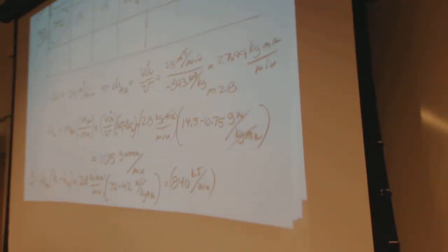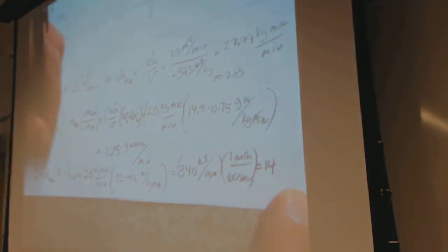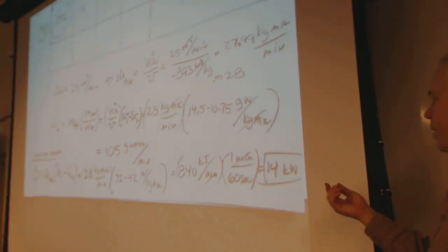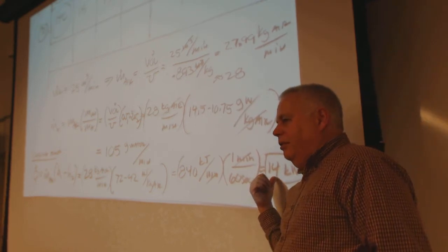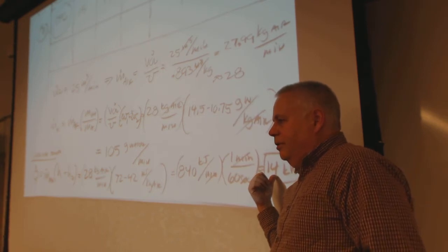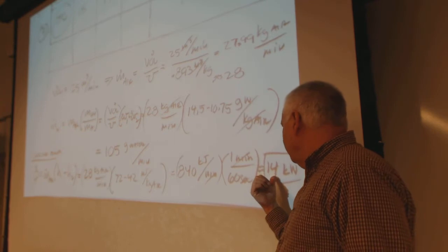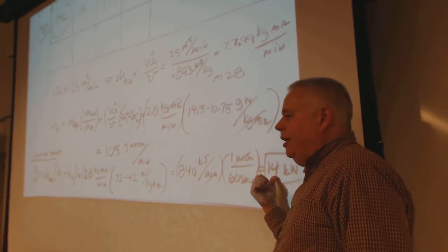I want that in watts — joules per second. To convert from kilojoules per minute to kilowatts, divide by 60. That gives about 14 kilowatts of chilling. Now, if we have a coefficient of performance of four, the electricity we need to supply to the compressor is 14 divided by 4, which is about 3.5 kilowatts to the compressor.